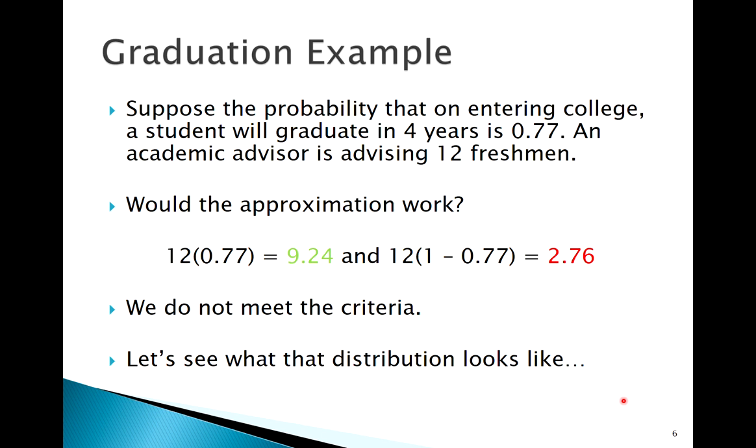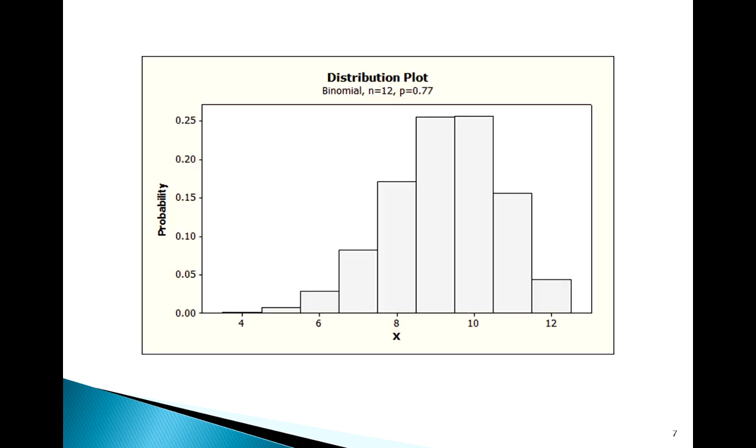So let's see again why we don't meet that criteria. So the binomial graph, so here this would be binomial with x, we could say is binomial with n equal to 12, p equal to 0.77. We could say it has this distribution. So what does that look like? Well, it looks like this, and we can see it's kind of left skewed. We wouldn't feel comfortable saying that this is normally distributed.